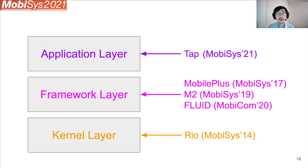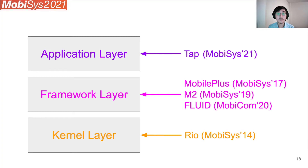Rio implements resource sharing in the kernel layer, which means it is transparent to not just applications but also frameworks. However, it has a similar deployment challenge as framework layer solutions because you need to modify the kernel. Of course, these papers have their own goals and target scenarios which differ from each other. TAP, for example, doesn't just enable resource sharing — it also has the additional concern that resource sharing should be easy. Fluid focuses on display or UI sharing rather than general resource sharing. Depending on the exact set of features you want to provide, sometimes you have no other choice but to implement them in a certain layer.